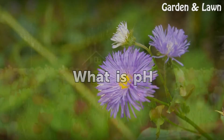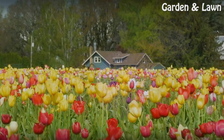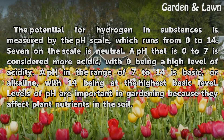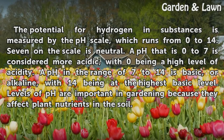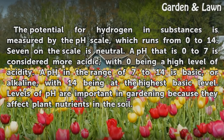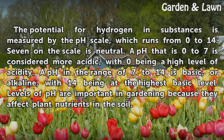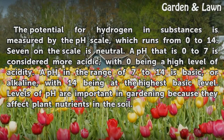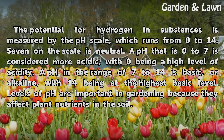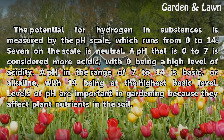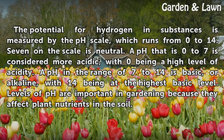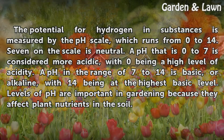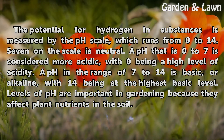What is pH? The potential for hydrogen in substances is measured by the pH scale, which runs from 0 to 14. 7 on the scale is neutral. A pH that is 0 to 7 is considered more acidic, with 0 being a high level of acidity. A pH in the range of 7 to 14 is basic, or alkaline, with 14 being at the highest basic level. Levels of pH are important in gardening because they affect plant nutrients in the soil.